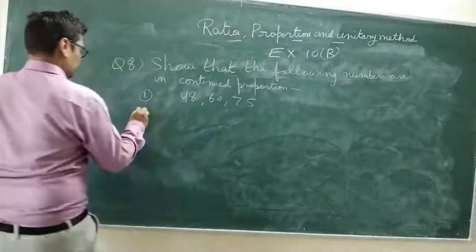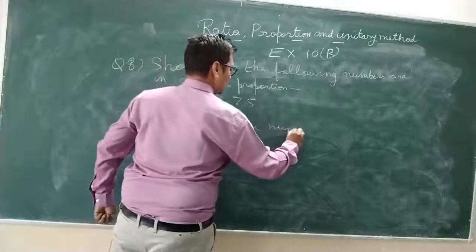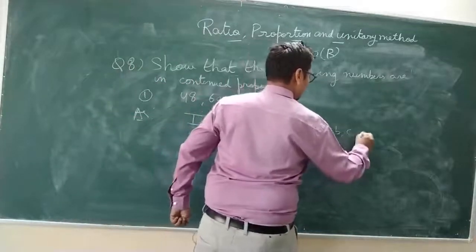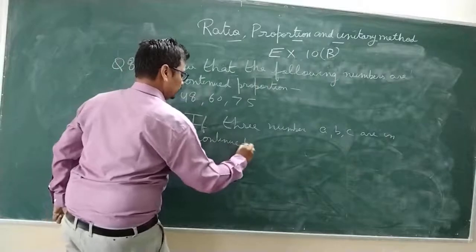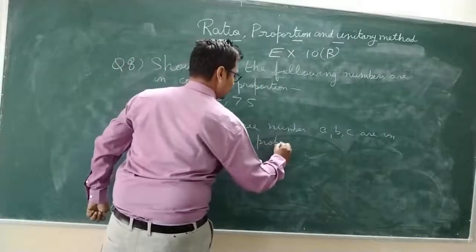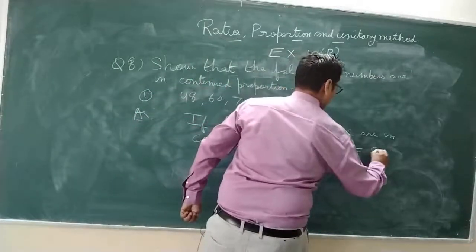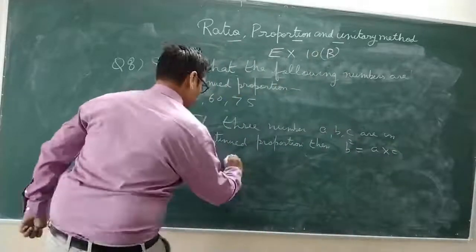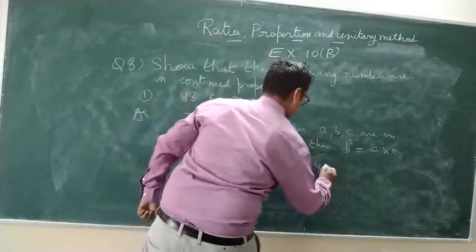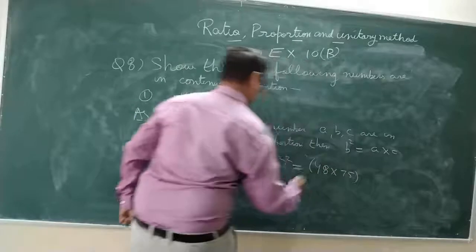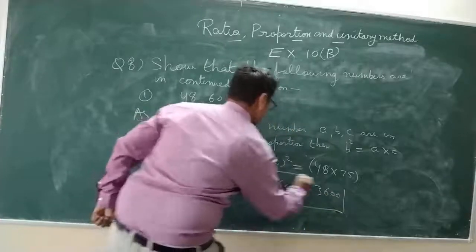Let the following numbers be in continued proportion. If three numbers A, B, C are in continued proportion, then B squared equals A multiplied by C. Here, 60 squared should equal 48 multiplied by 75. This gives 3600 on both sides, so they are in continued proportion.